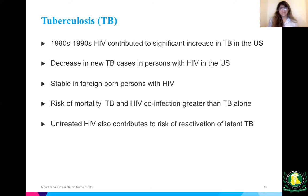Starting with TB: back in the 80s and 90s, HIV contributed to a significant increase in TB in the United States. There has been a decrease in new TB cases in persons with HIV in the US, though it's stable in foreign-born persons with HIV. The risk of mortality with co-infection — a patient having both TB and HIV — is greater than with TB alone, and untreated HIV contributes to the risk of reactivating latent TB.